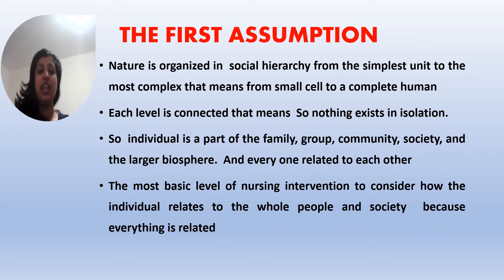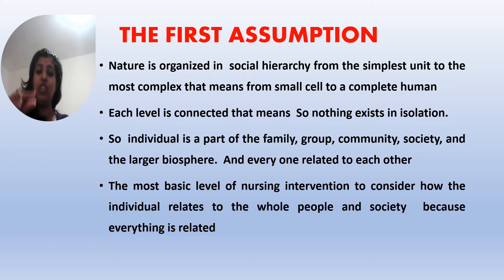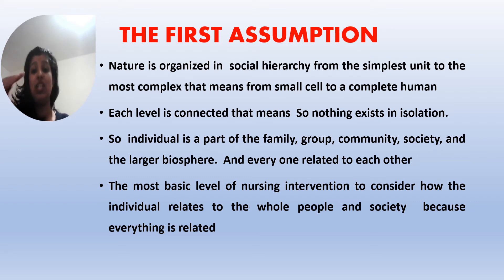The first assumption states that nature is organized in a social hierarchy from the simplest unit to the most complex — from a small cell to a complete human. Each level is connected: from cells to tissues, complex tissues, groups of tissues, a human being, an individual, groups of individuals, family, society, and community. Everything is related; nothing exists in isolation.